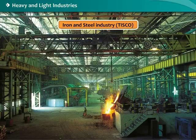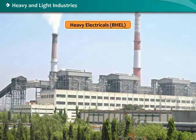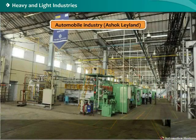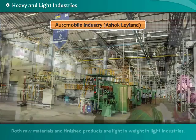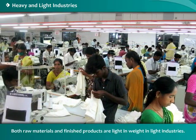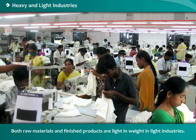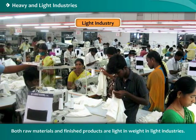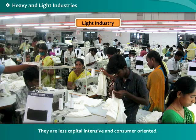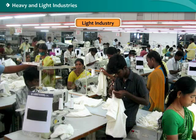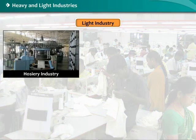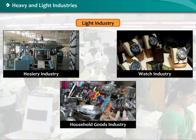Examples of heavy industries include iron and steel, BHEL (Bharat Heavy Electricals), and the automobile industry such as Ashok Leyland. In light industries, both raw materials and finished products are light in weight. They are less capital intensive and consumer oriented; industries manufacturing hosiery, watches, and household goods can be classified as light industries.